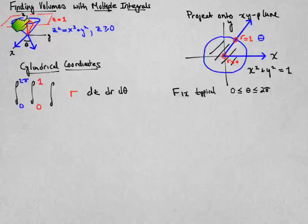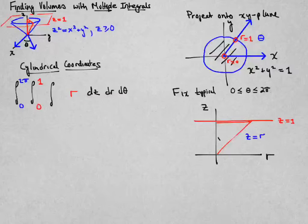And that cuts out a triangular portion here of the cone. I'm going to draw that radial slice in the r-z plane. The axis coming along the ray that theta determines is r, and then the vertical axis is z. And I get this triangular figure here.